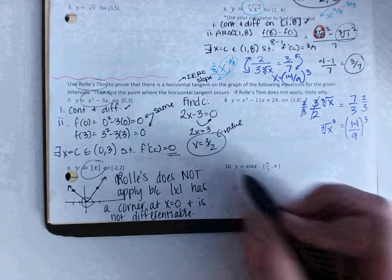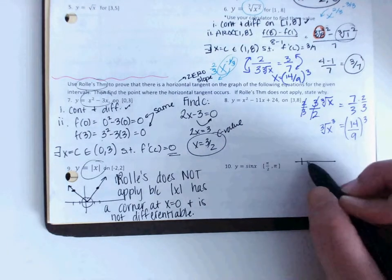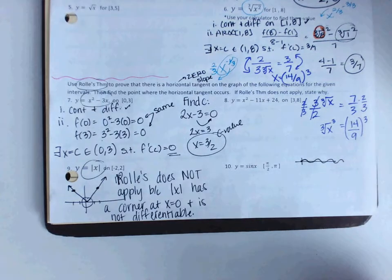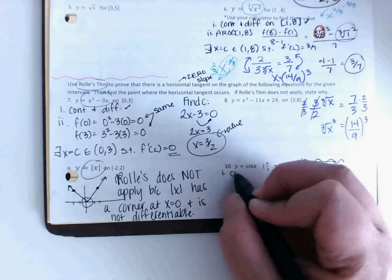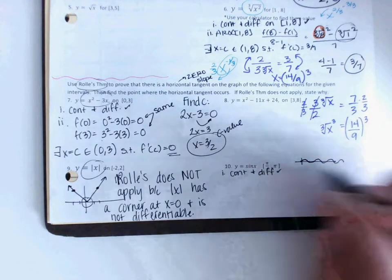Last one we're going to do together, look at number 10. You have the sine x graph. Think about what that looks like. It starts at 0 and it just does this for forever. So sine x is both continuous and differentiable. So check that off the list.